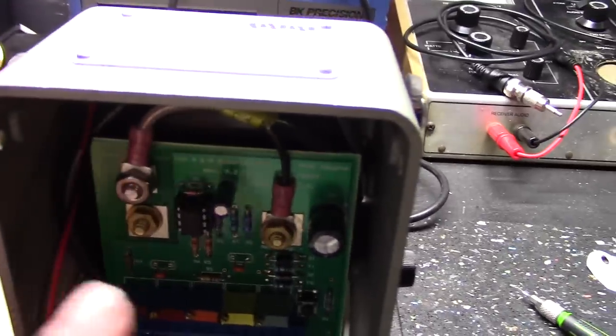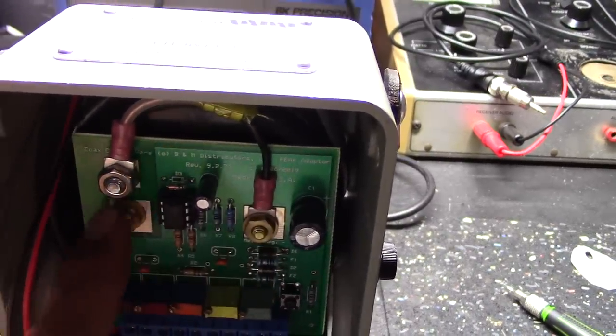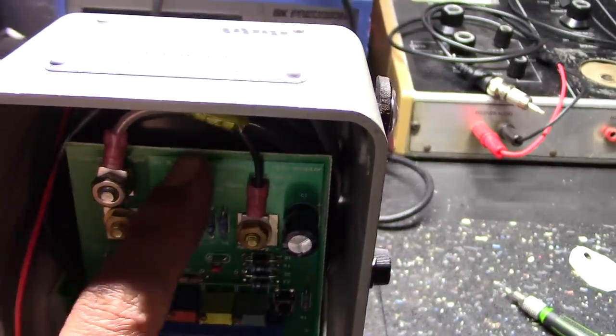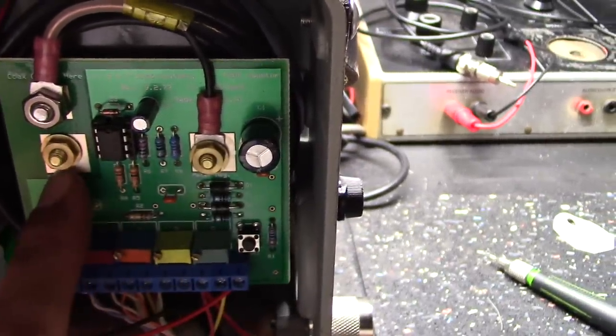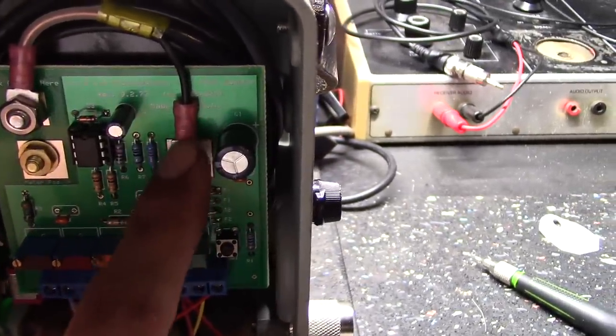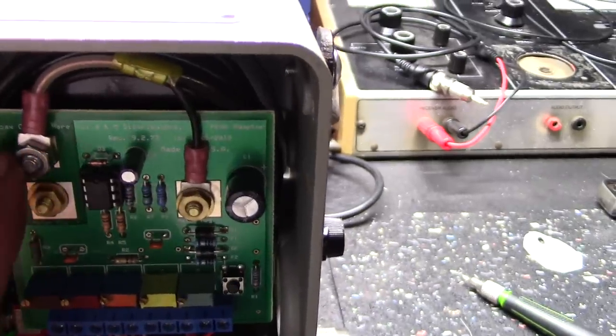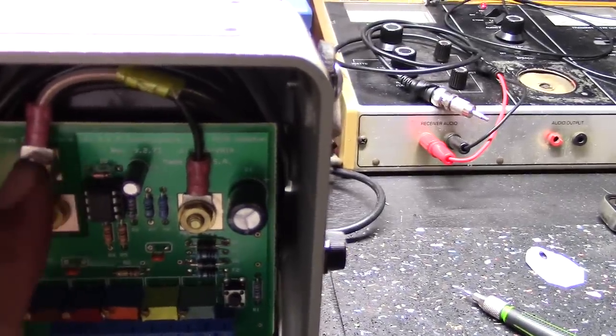Like I said, just had to undo the two terminals here. This one has two holes already in the board. Put your negative onto this post. Then your positive actually goes onto this upper post.